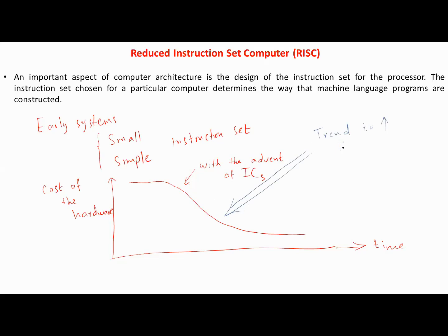And here there was a trend to increase the instruction set, and the number of instructions ranges from 100 to 200 and even more. And these computers had a variety of data types and addressing modes. A computer with a large number of instructions is classified as a complex instruction set computer, abbreviated as CISC.